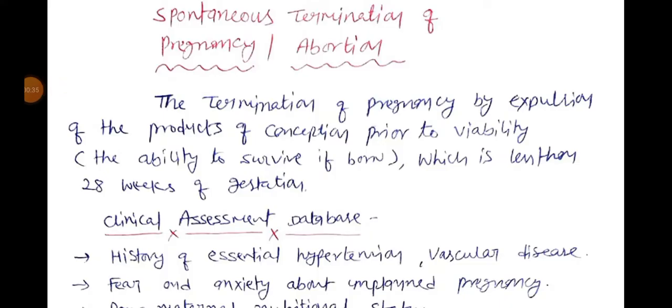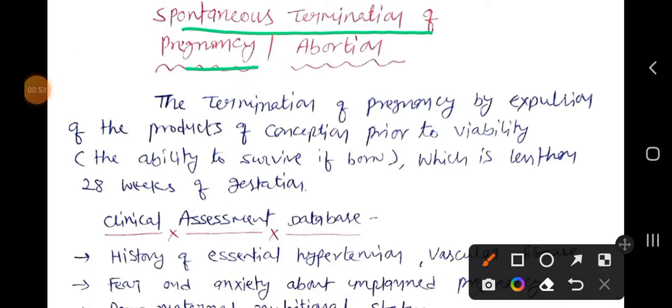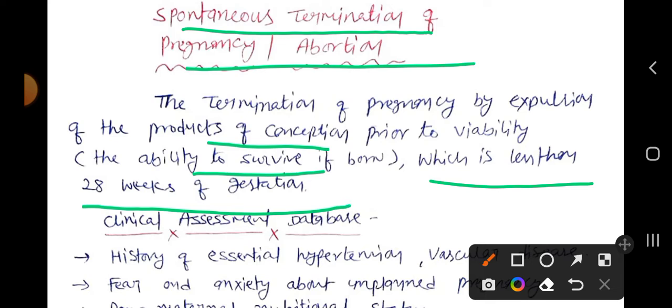Friends, first we will see a short description and learn the clinical database for the nursing care plan. Spontaneous termination of pregnancy and abortion is our topic. It refers to the termination of the pregnancy by expulsion of the product of conception prior to viability — the ability to survive if born — which is less than 20 to 28 weeks of gestation.